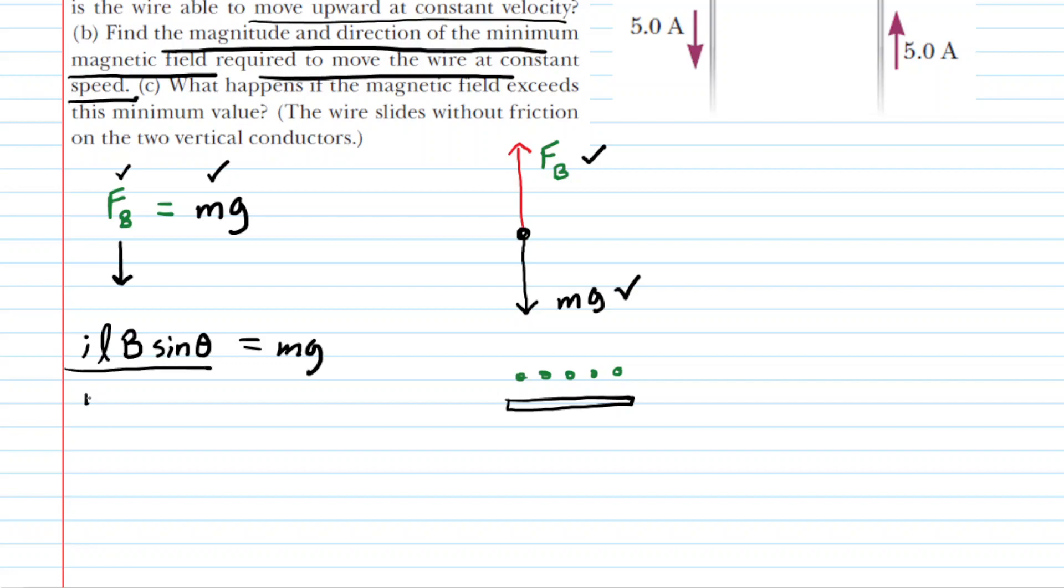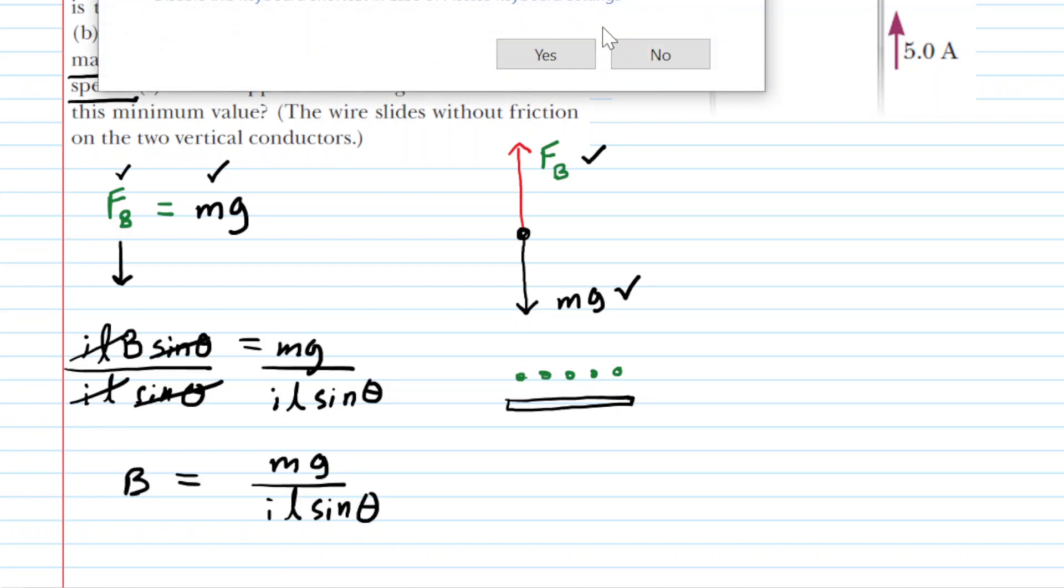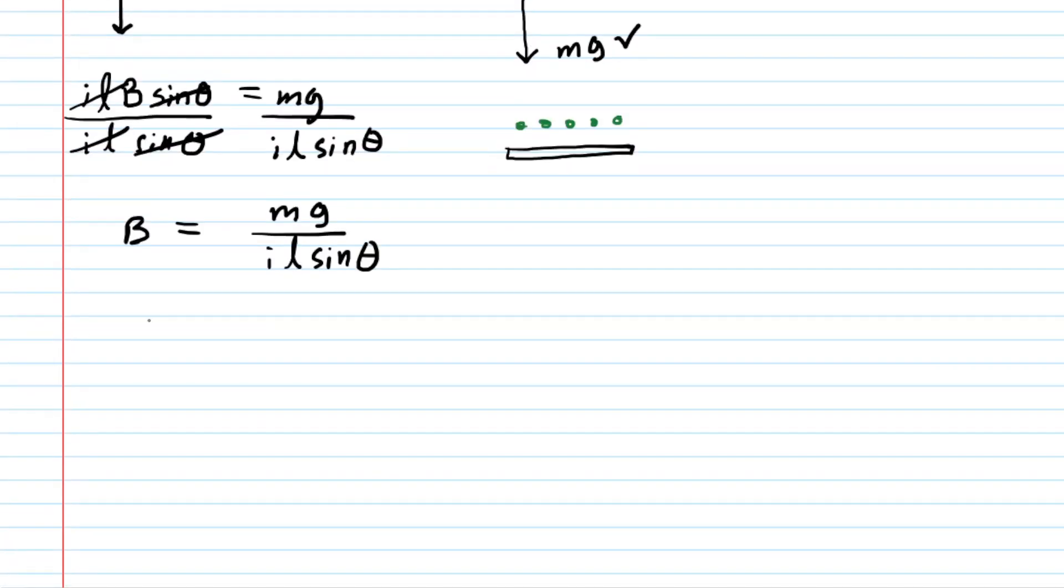And so we can begin to solve for B. We will divide both sides of this equation by the term I L sine theta. Doing so cancels I L sine theta on the left hand side. And then we can simply plug in the known values. Everything was stated in the question here. And remember the angle is 90 degrees.